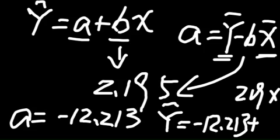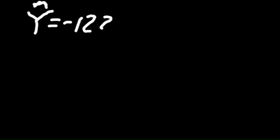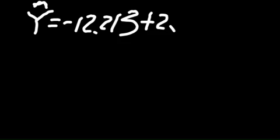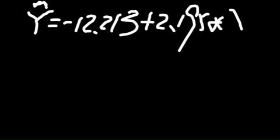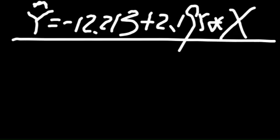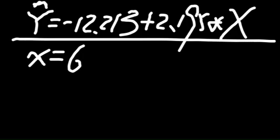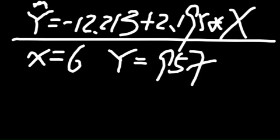For the second question, estimate the sales for a salesperson who has got six contacts and comment on your outcome. Your equation is Y hat equals minus 12.213 plus 2.195 times X. In this case, if our X is six, what will be our Y? We get our Y will be 957 sales, so that's 957,000 dollars.